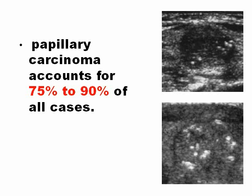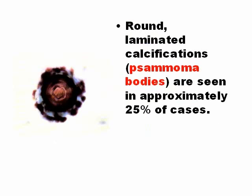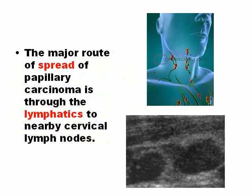A sign of malignancy in papillary thyroid cancer is calcifications called psammoma bodies, which are seen in approximately 25% of papillary thyroid cancers. The major route of spread of papillary carcinoma is via the lymphatics, which is why doctors need to look at the lymphatic ganglia around the thyroid gland.